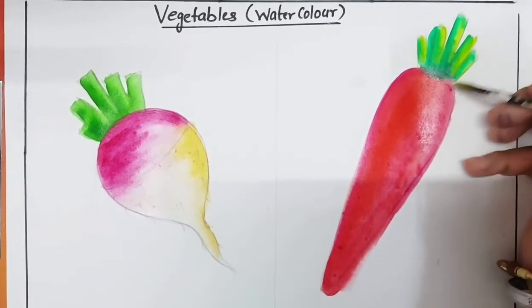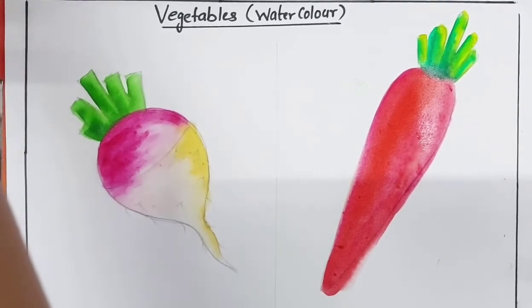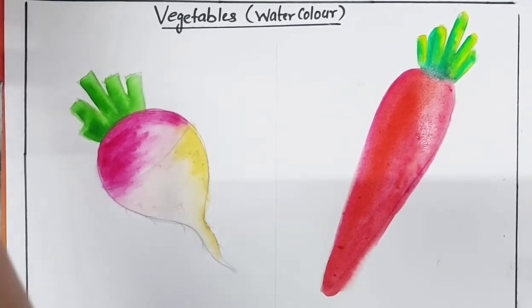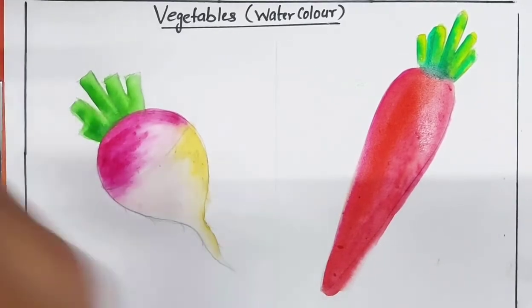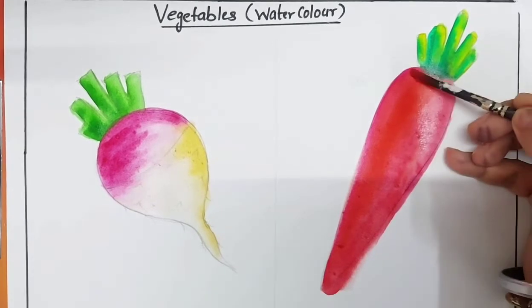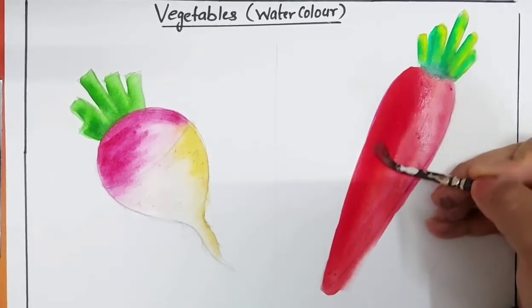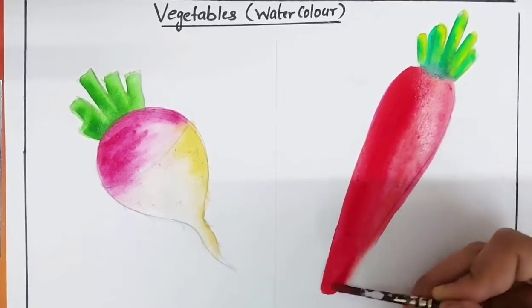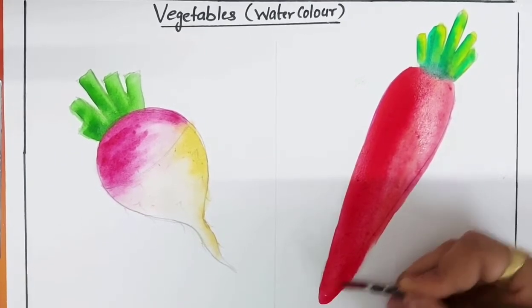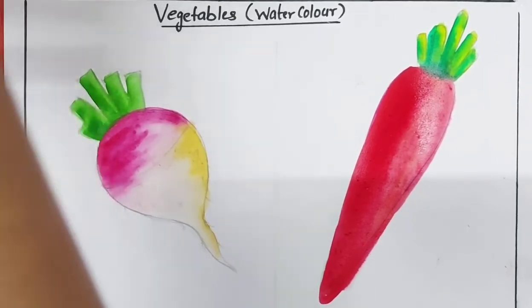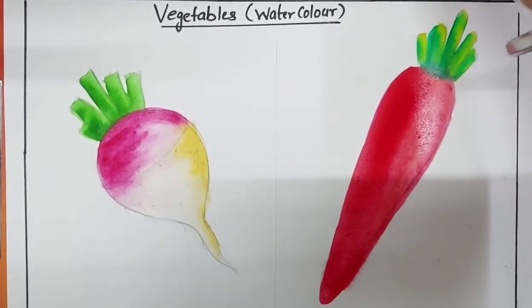Now I am adding a little bit of yellow color. Now add some more red color. Now I am using brown color for outline.